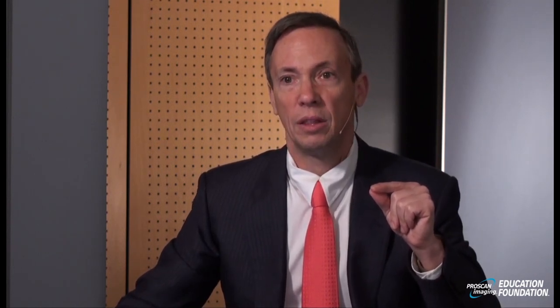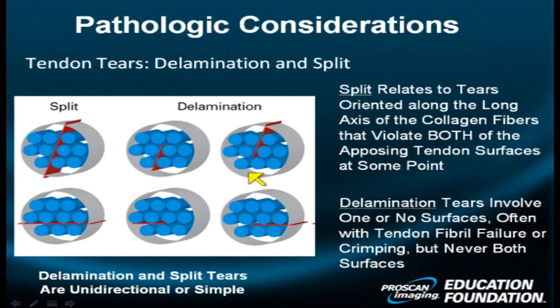In contrast, if a linear or laminar tear exits both sides — whether the bursal side and the articular side, or both the medial and lateral sides — we refer to that as a split tear. An important difference to remember: these tears are very narrow, so they're difficult to appreciate if you only image tangent to the orientation of the tear. At some point you need to be perpendicular to the tear to appreciate its true nature. In summary, split tears come out both sides of the tendon, whereas delamination tears may violate one surface, the other surface, or no surface at all — they may be totally intrasubstance in character.